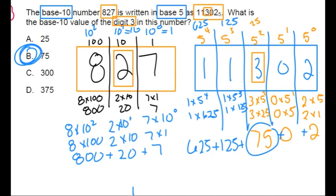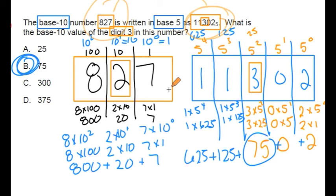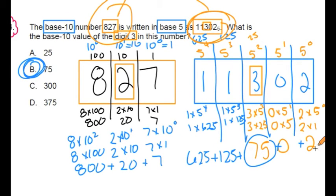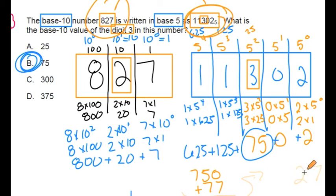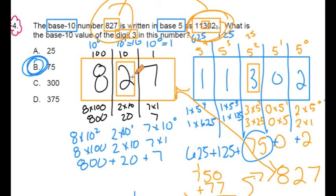Now if we were to add up these values, 625 plus 125 plus 75 plus 2, what do you think we're going to get? This number represents 827, so we should anticipate that this should add up to 827. Let's see if that's the case. 625 plus 125 is 750. 75 plus 2 is 77. This would get us 827. And look at that, this base 5 number matches up with our base 10 number.